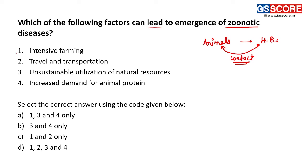First is intensive farming — it increases contact between animals and human beings. Second, travel and transportation — it has increased contact of human beings with different animals across the world. Third is unsustainable utilization of natural resources — we are clearing forests and reaching close to wildlife. Fourth is increased demand for animal protein. All these factors lead to emergence of zoonotic diseases, so the answer is D: 1, 2, 3 and 4.